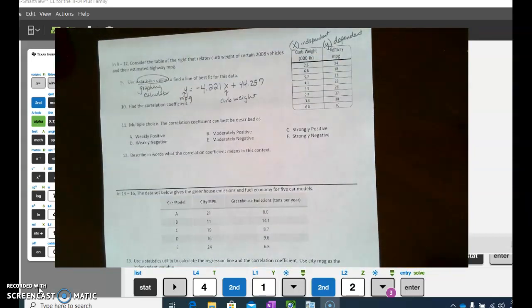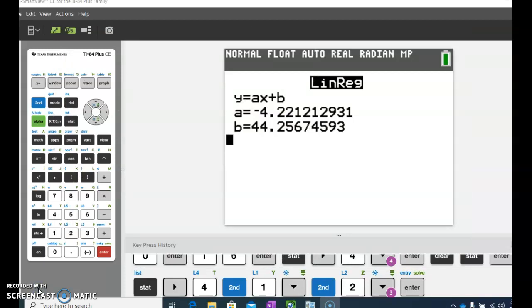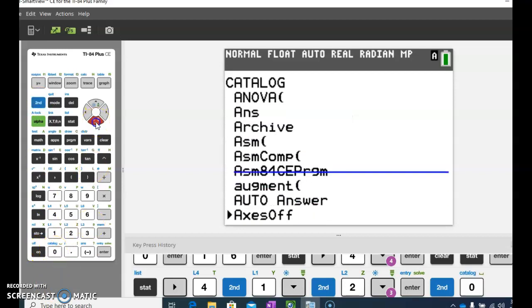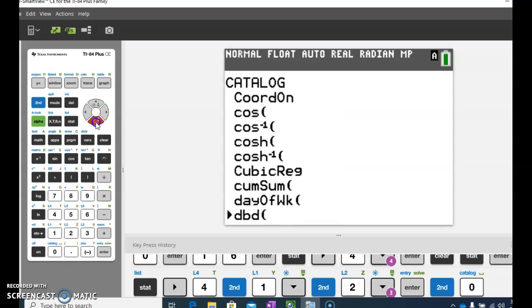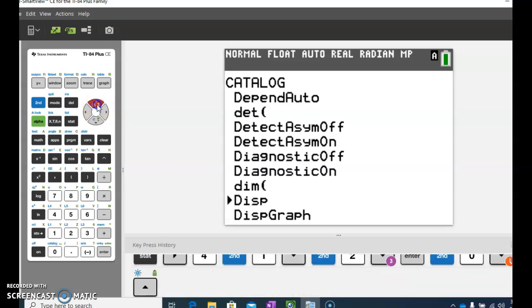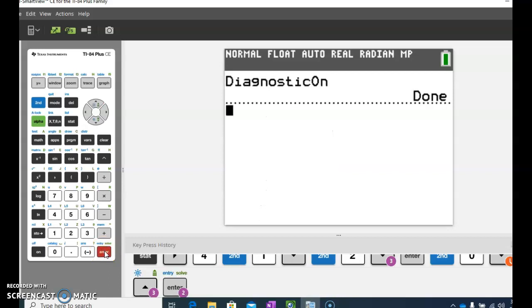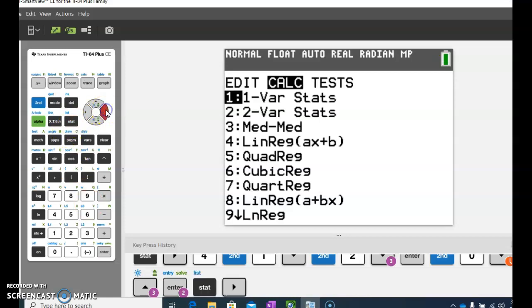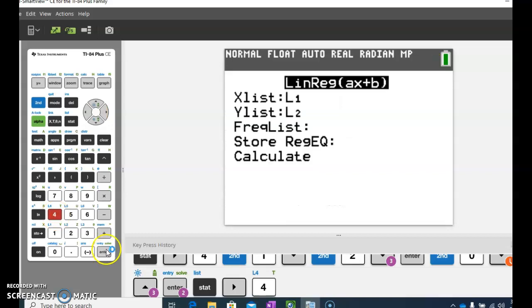All right, now the next question asks me for the correlation coefficient. So we're going to actually go back to our calculator. And we notice on the calculator, it doesn't give us any other information. But the calculator can give us the correlation coefficient. And we find that information by pulling up the catalog. So we're going to hit second and zero. That brings us to the catalog. And I'm going to scroll until I get to where it says diagnostics on. I have to hit enter again so that it says done. Now when I go to stat and calc and linear regression and calculate, it should now give me more information.